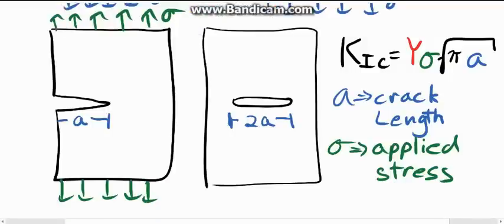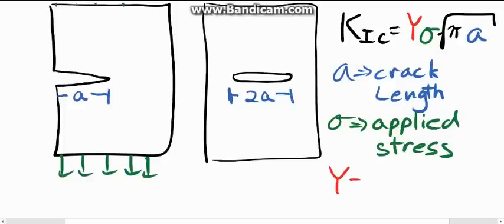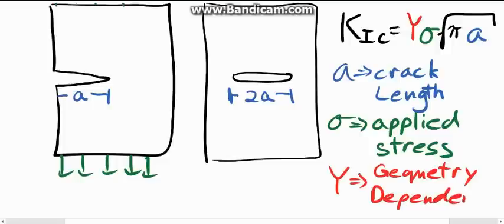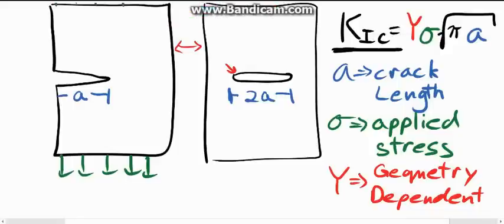And Y. Now, most of you are probably thinking that Y is a material property, but actually, in this case, Y is a geometry-dependent parameter. It depends on the way that the crack tip is and depends on the overall sample itself. Everything on the right-hand side of the equation is geometry-dependent. What that means is our K1C, this K1C, is our material property.